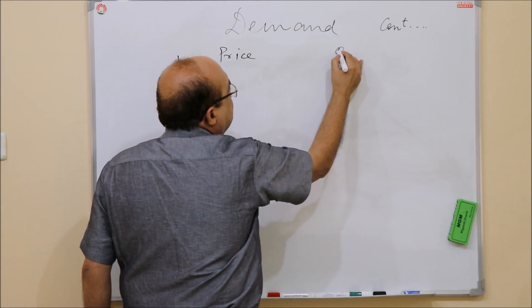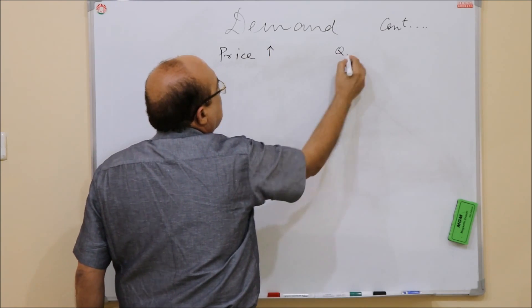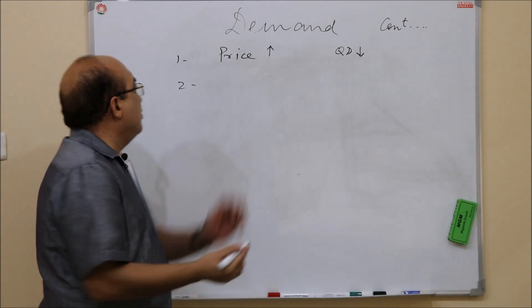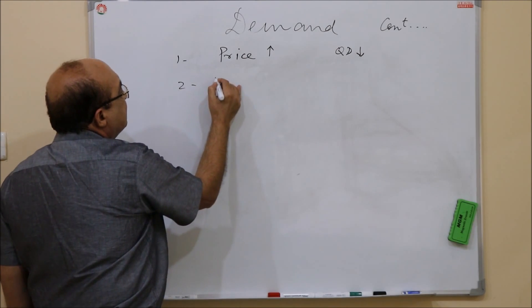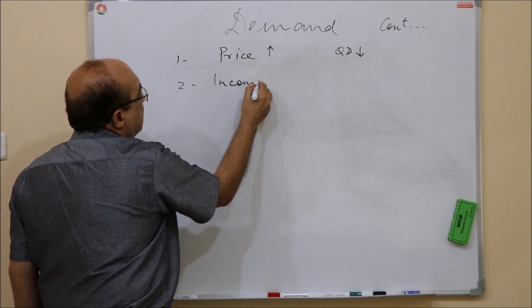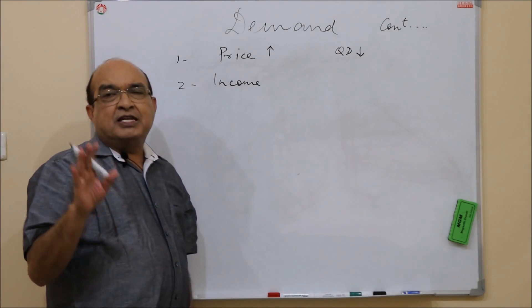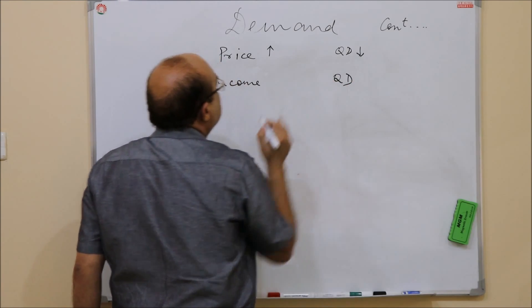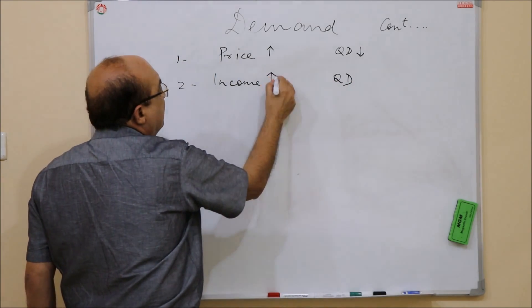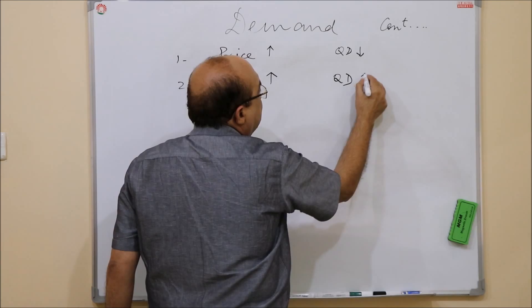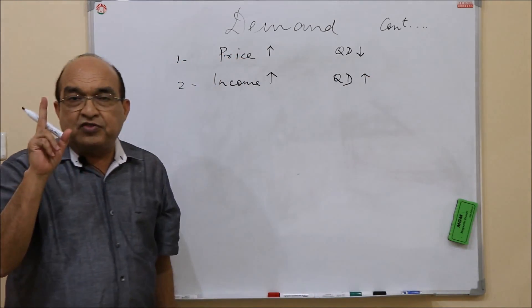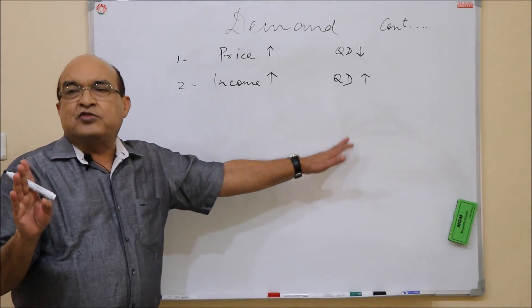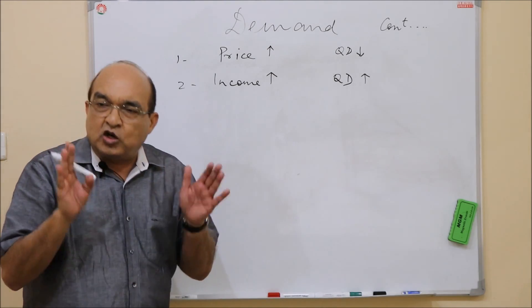So when price increases, quantity demanded goes down, and vice versa. That is, if price declines, quantity demanded will go up. Another important factor is income. If income of the people - I mean the nominal income - has a positive relationship with quantity demanded. That is, if income increases, quantity demanded will also increase, if the good happens to be a normal good. We will discuss this also - what do we mean when we say normal good.